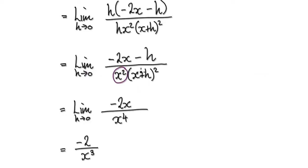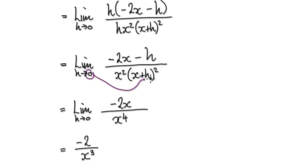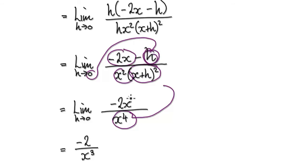Here you've got one bubble multiplying another bubble. If you put zero in, x plus zero is x, and then you square it giving x squared — so this thing becomes x to the power of four. Then putting zero into this h gives minus 2x minus zero, which is just minus 2x. You're not dividing by zero at all.